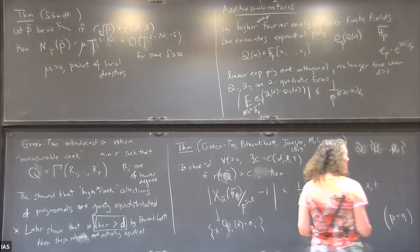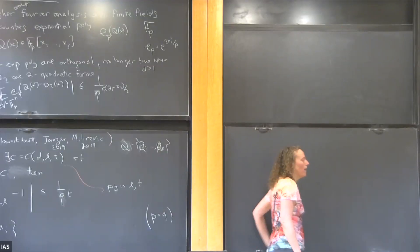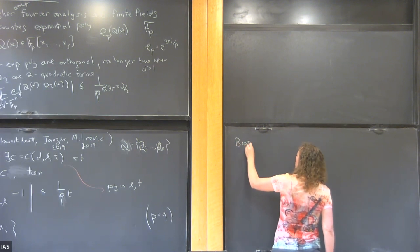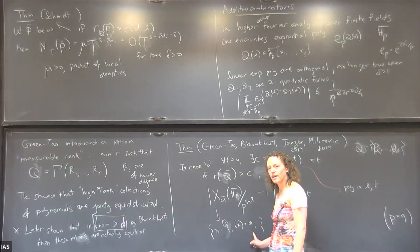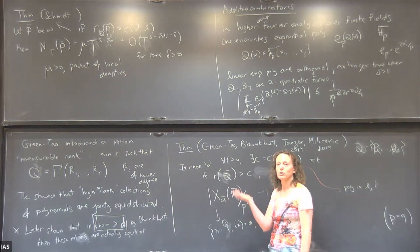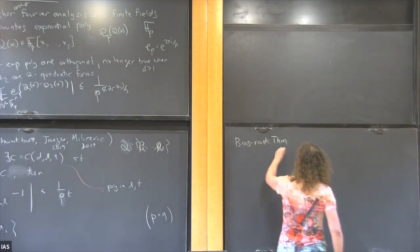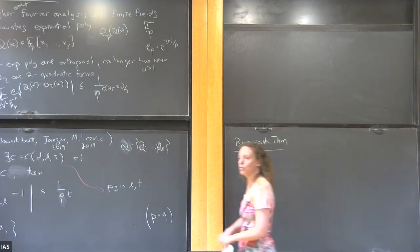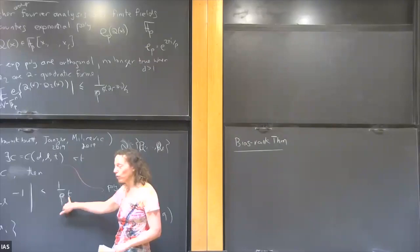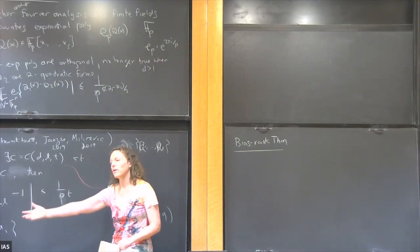The main ingredient behind this equidistribution result is what we call the bias-rank theorem. The crucial point — independent of number of variables — is that if you tell me how close you want the equidistribution, I tell you how high a rank you need. The bias-rank theorem says: if you have a polynomial Q and its exponential sum is biased (greater than 1/p^t), then Q is low rank. Depending on your application and how good an estimate you need, you adjust accordingly.